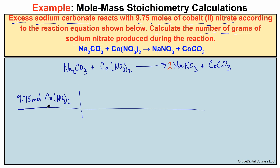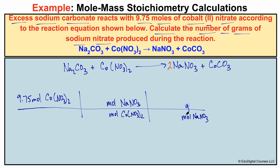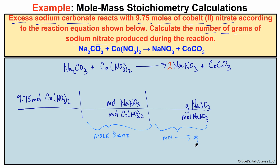We need to cancel out the moles of cobalt-2 nitrate by placing it in the denominator of our mole ratio fraction. Then we figure out the moles of NaNO₃ produced using the balanced equation. After that, we cancel the moles of NaNO₃ and convert to grams of NaNO₃ using the periodic table. This first conversion is our mole ratio step, and the second converts moles of NaNO₃ to grams of NaNO₃.